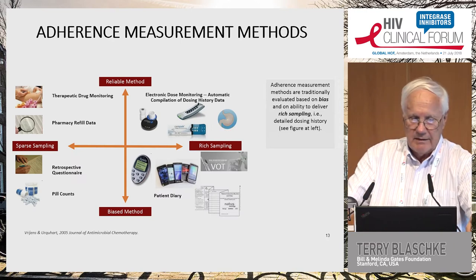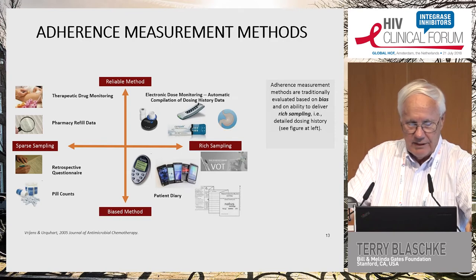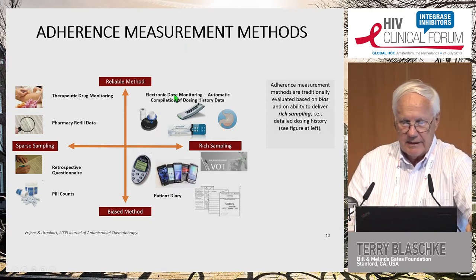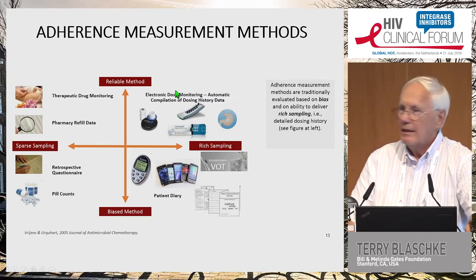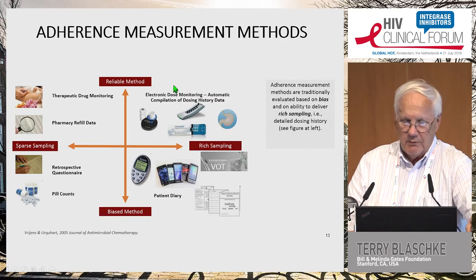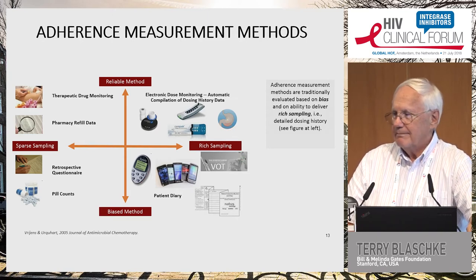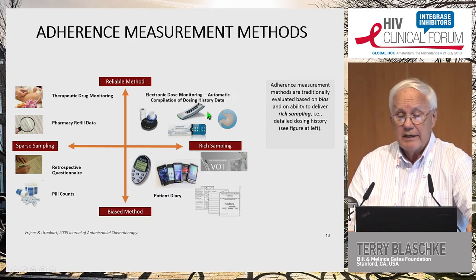Adherence measurement methods are summarized across four quadrants with axes representing sparse versus rich sampling and biased versus reliable methods. We need reliable methods that give us rich sampling to truly understand what a patient is doing and how to counsel that patient. We heard the word counseling often today, and counseling requires having that information about the patient — it requires individually tailored consultation or adherence interventions rather than textbook implementation.